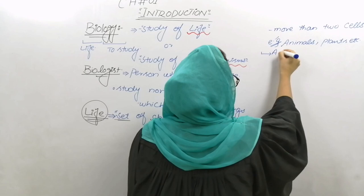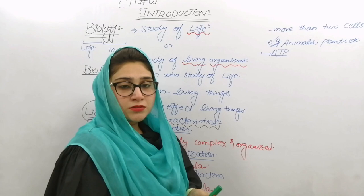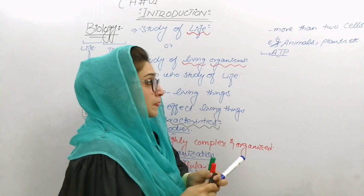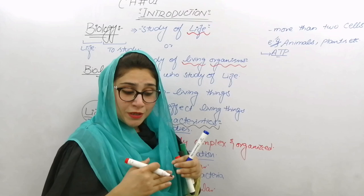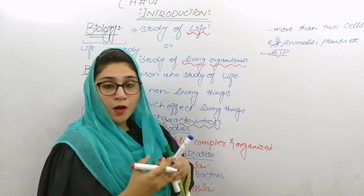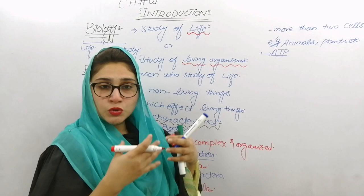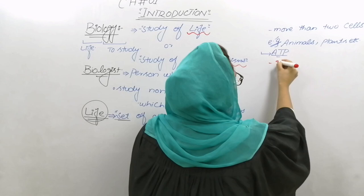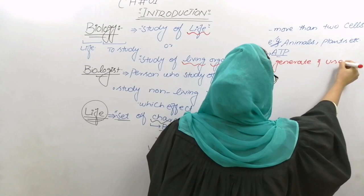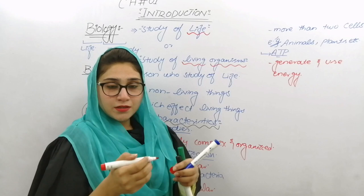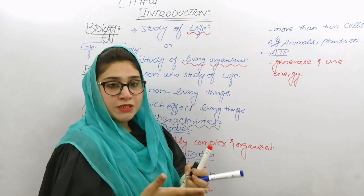इनके अंदर जो ATP है — ATP का मतलब है Adenosine Triphosphate. That is the energy currency — हमारी Body के अंदर यह energy currency है। जितने भी Living Organisms होते हैं वो energy produce भी करते हैं और उसको अपने مختلف کاموں میں استعمال بھی کرتے ہیں۔ जैसे हम कोई काम करते हैं तो उसके लिए energy चाहिए होती है। They generate and use energy — energy produce भी करते हैं और उसको अपनी सारी functioning के लिए इस्तमाल भी करते हैं।